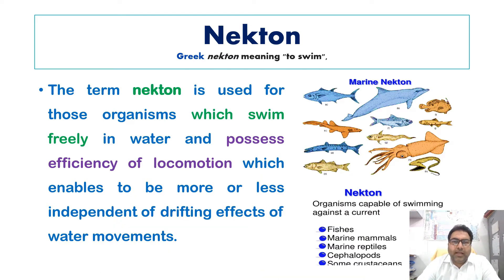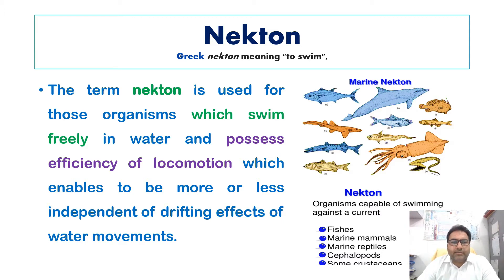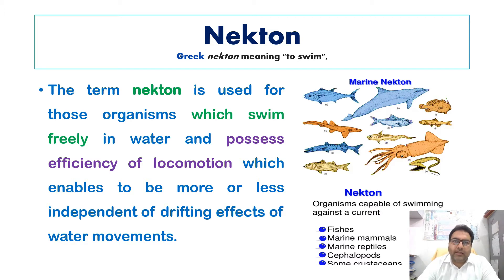The term nekton is derived from a Greek word which means 'to swim.' The term nekton is used for those organisms which swim freely in water and possess efficiency of locomotion, which enables them to be more or less independent of the drifting effects of water movements.